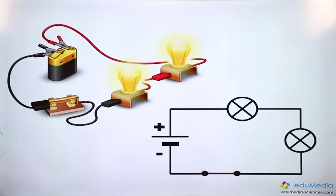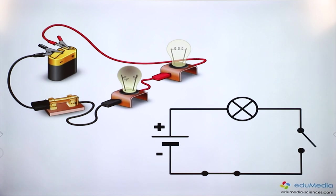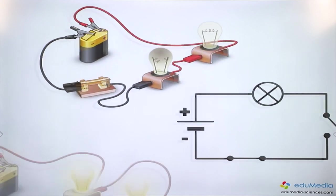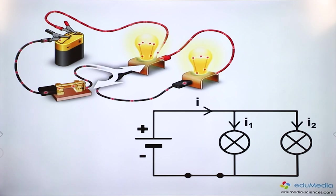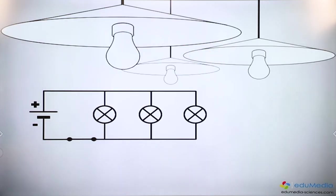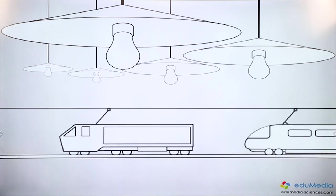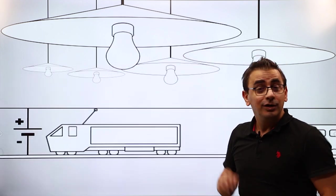In the first case, we say the light bulbs have been connected in series. They have one terminal in common and the current that flows through the first light bulb is the same as the one flowing through the second. If the filament in one bulb is broken, the current is blocked in the whole branch and the other bulb turns off. In the second case, the light bulbs are set up in parallel. The charges can take two different paths and the current in each bulb can be different. If one bulb is faulty, the other continues to light up.